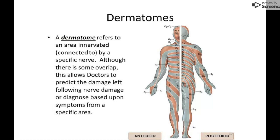This slide introduces dermatomes. Because each nerve goes to a fairly consistent area, you can map regions of the body to specific nerves. For example, the shoulder area is marked C4, so if someone experiences numbness there, that indicates the C4 nerve may be damaged. If numbness is just in the middle finger out to the pinky, that corresponds to C8. This body map helps doctors identify where nerve damage might be occurring.